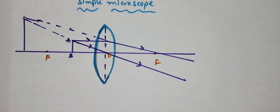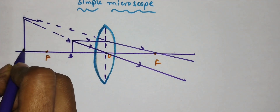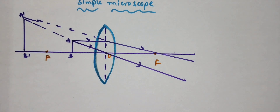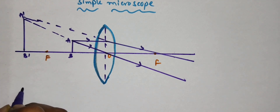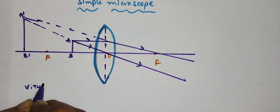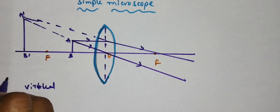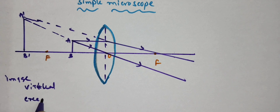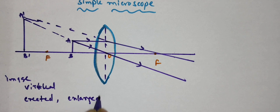This is A-dash, B-dash. Now we write the conditions: the image is forming on the same side as the object, which is taken as negative. The image is virtual and erected. It is an enlarged image forming on the same side of the lens. This is the ray diagram of the simple microscope. Now we can derive the magnification equation.